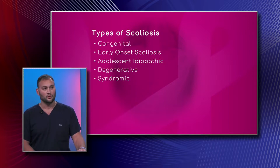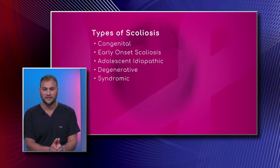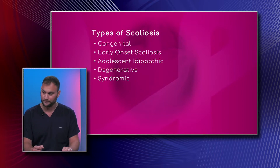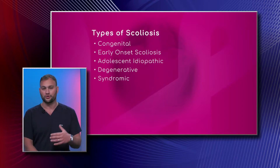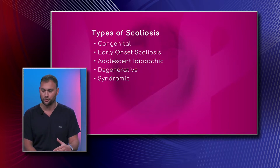Early onset scoliosis is a common term but somewhat of a misnomer — a lot of these kids actually belong to the congenital group or the later adolescent group; they're in the middle. You should still be looking for things like neurofibromatosis or congenital fusion, but it's less likely.